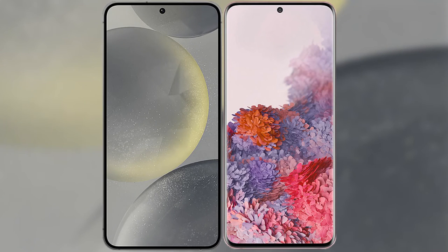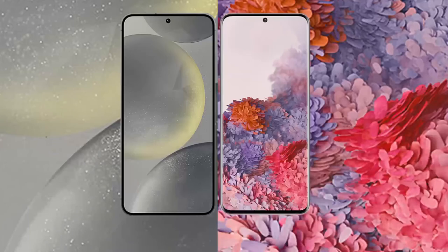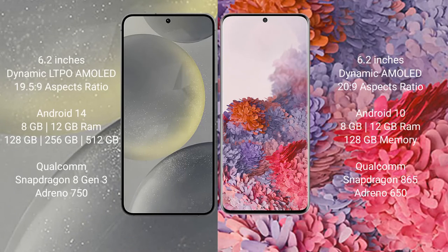I will compare the new Samsung Galaxy S24 with Samsung Galaxy S20. Samsung Galaxy S24 comes with a 6.2-inch Dynamic LTPO AMOLED display and aspect ratio 19.5:9. Samsung Galaxy S20 comes with a 6.2-inch Dynamic AMOLED display and aspect ratio 20:9.